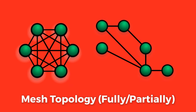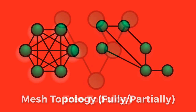We also have the mesh topology, where each and every node is connected to every other node. Earlier it was only a theoretical topology, but today due to wireless communication it has become a reality. It is of two types: fully connected or partially connected. In a fully connected mesh topology, no switching or broadcasting is needed, and the total connections required is given by the formula: C = n(n−1)/2, where C is the total connections and n is the number of nodes.